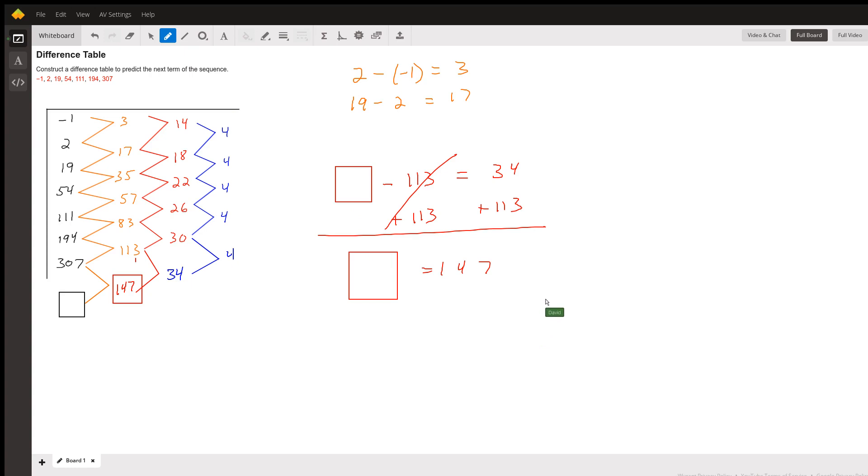We're going to repeat the same process. So the value in the black box, which is the value that we're missing, is minus 307 equals 147.